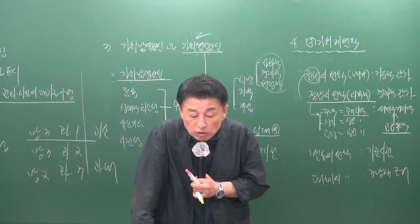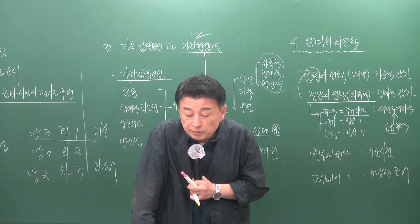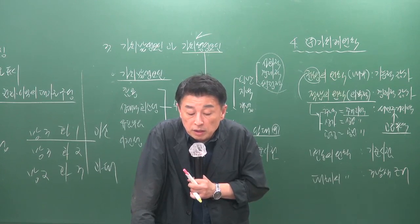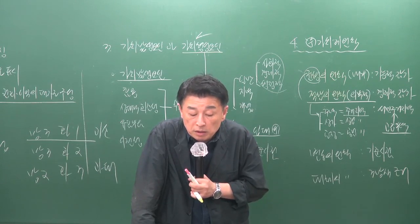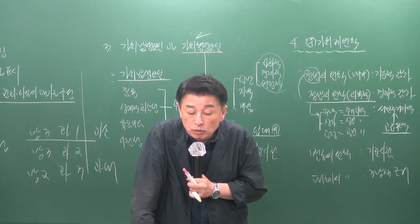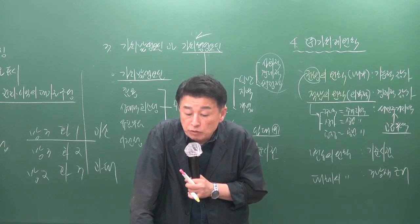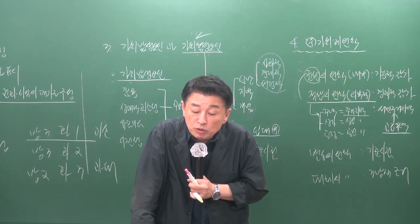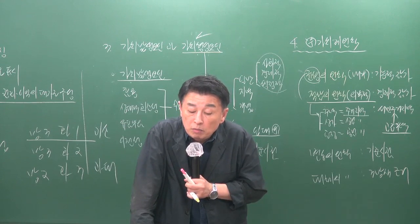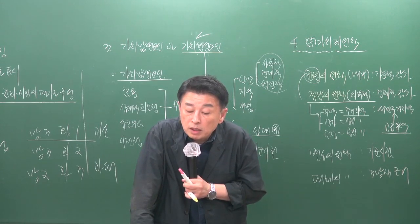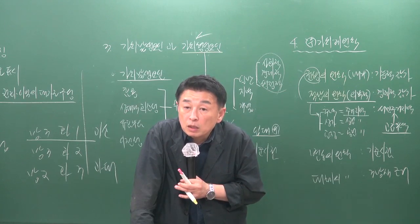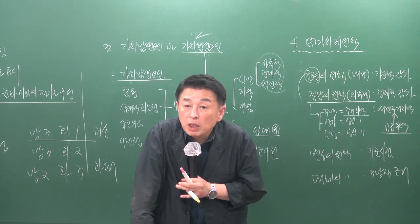15번 문제 3번 보기에서 수요와 공급의 변동에 따라 단기적으로 가치와 가격이 일치한다는 것은 틀린 설명으로, 단기적으로는 괴리된다는 것이 맞습니다. 17번 문제에서 복도의 천장 높이를 과대개량한 전원주택이 냉난방비 문제로 시장에서 선호도가 떨어진다는 것은 균형의 원칙 - 밸런스가 맞지 않는 사례입니다.